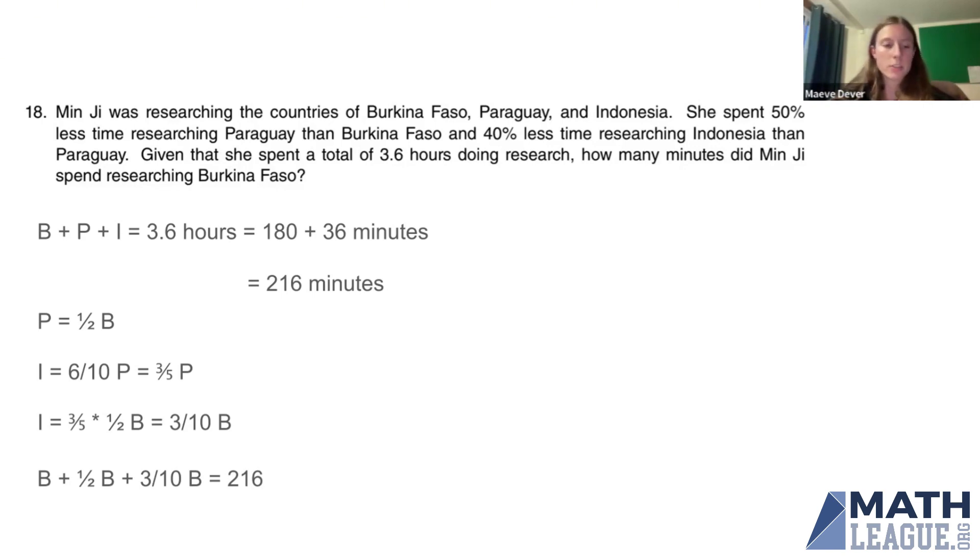Well, we've got to do some fractions now, it looks like. Let's make these all into tenths. B is 10 tenths B. 1 half B is 5 tenths B, and 3 tenths B, of course, is 3 tenths B.